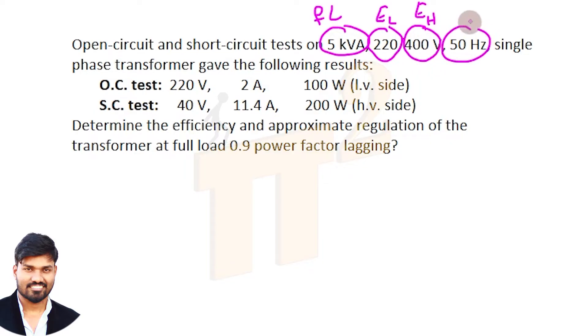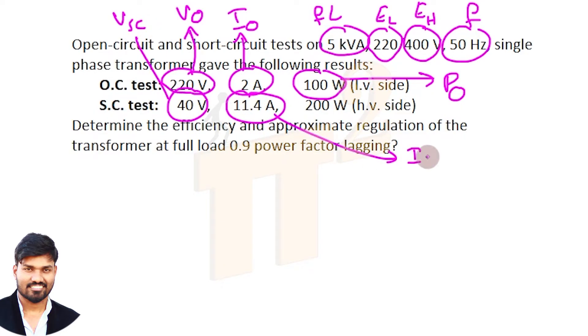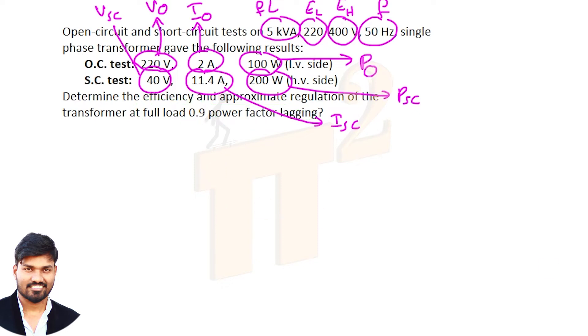Here the frequency is given, V_0 = 220 volts on the low voltage side, this is I_0, this is P_0 no load power, this is V_SC short circuit voltage, this is short circuit current, this is P_SC. It is asked to find out the efficiency and approximate regulation at full load and 0.9 power factor lagging.